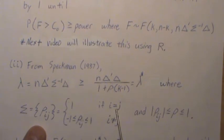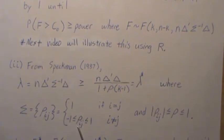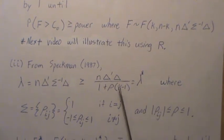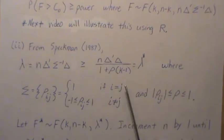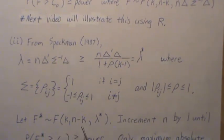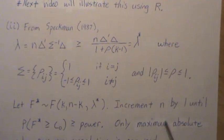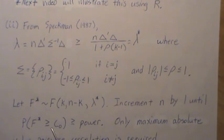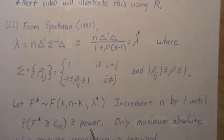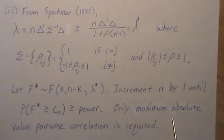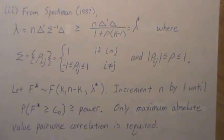So if sigma can be thought of as rho i j, where i's down the diagonal, and the off diagonals are between minus one and one, and we let rho be the maximum absolute value of the pairwise correlations. And then this is much easier to estimate. So we let f star be a non-central f distribution with this non-centrality parameter. We increment n by 1 until this achieves the power that we want.